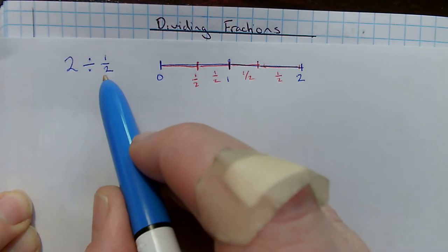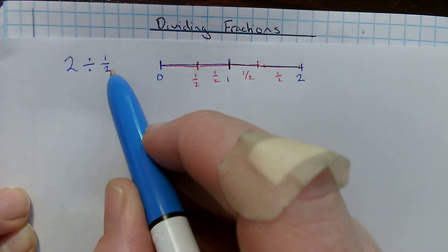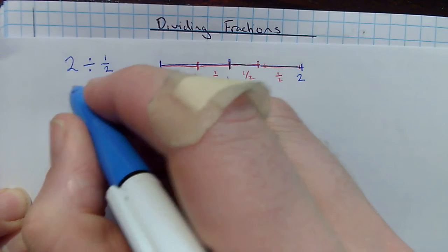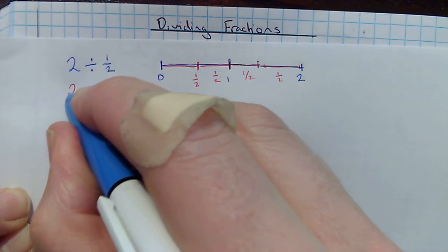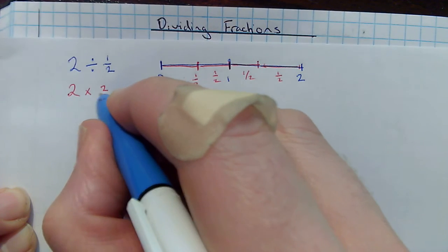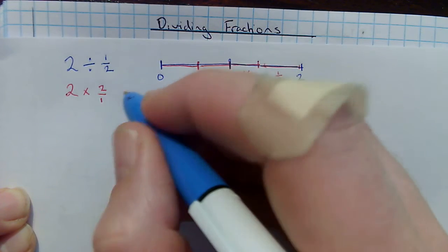So dividing by a half is going to be the same as multiplying by 2. I've got 4 halves in here. So 2 divided by a half is the same as 2 multiplied by 2. And we can think about that as 2 multiplied by 2 over 1.